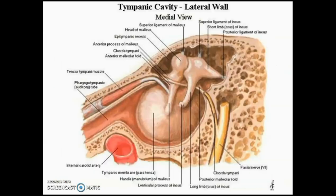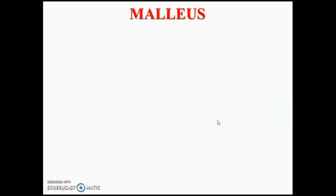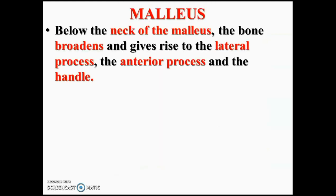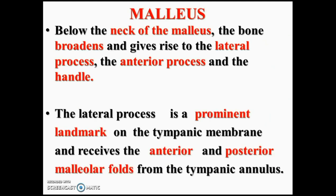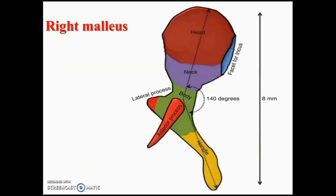This is very important in ossicular reconstruction. The chorda tympani runs medial to the handle of malleus, coming from the facial nerve in the posterior wall of the tympanic cavity. Below the neck of the malleus you will see two processes: the lateral process and anterior process. The lateral process is a prominent landmark on the tympanic membrane, visible on otoscopic examination. It receives the anterior and posterior malleal folds of the tympanic membrane, and between them you see the pars flaccida.